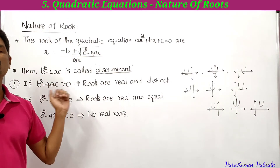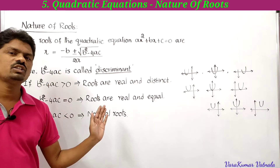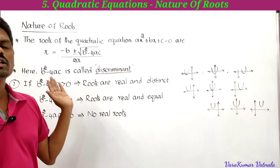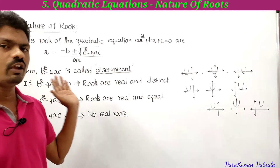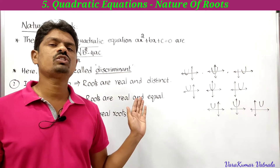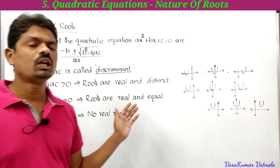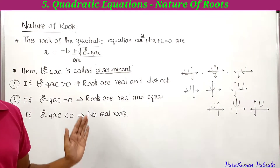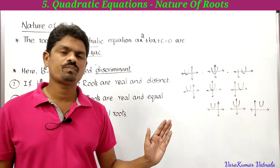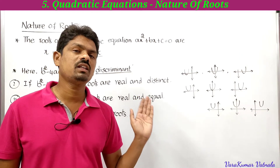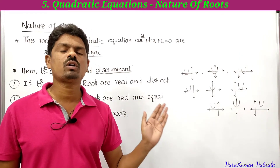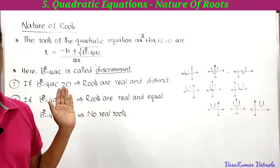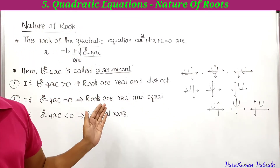To summarize: if b²-4ac > 0, roots are real and distinct; if b²-4ac = 0, roots are real and equal; if b²-4ac < 0, there are no real roots. By finding the value of b²-4ac, we can determine the nature of the given quadratic equation.